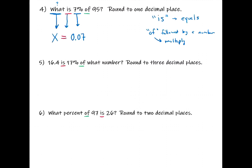The word 'of' means multiply, and 95 is already a number so we plug in 95. When creating an equation — taking a sentence in English and converting it — everything has to be either a number or a symbol. So we have: what is seven percent of 95, which translates to x = 0.07 × 95.